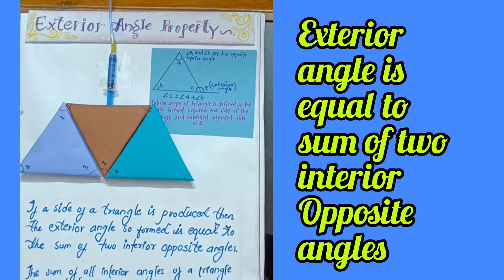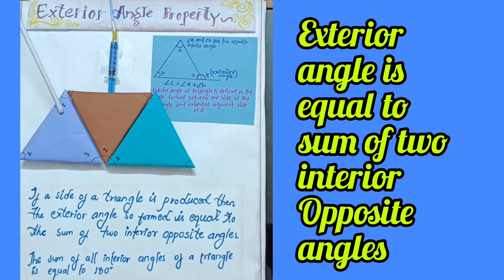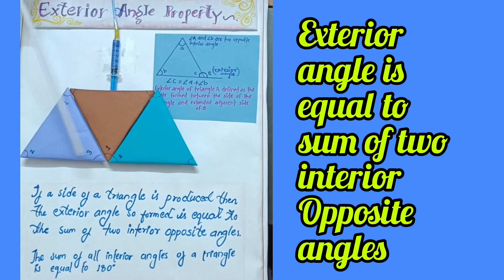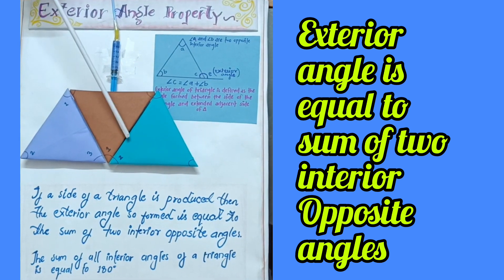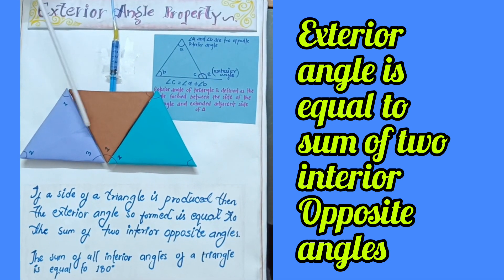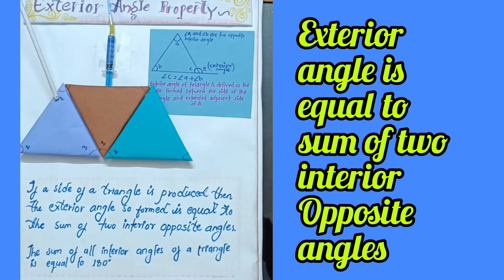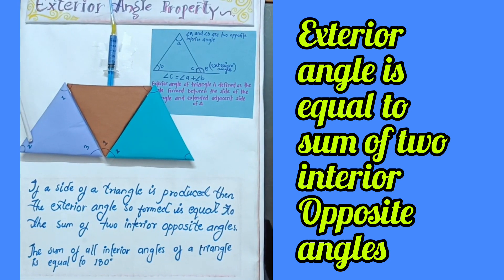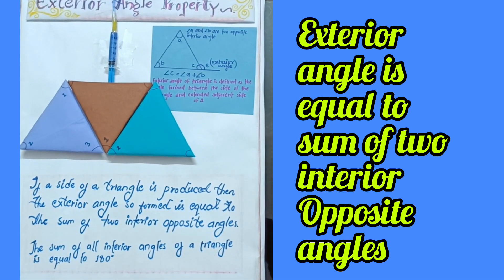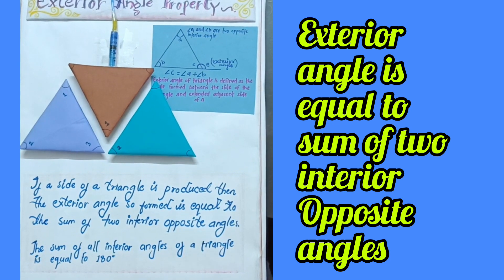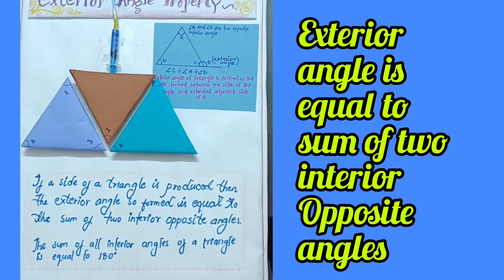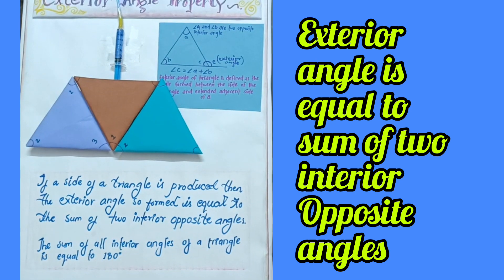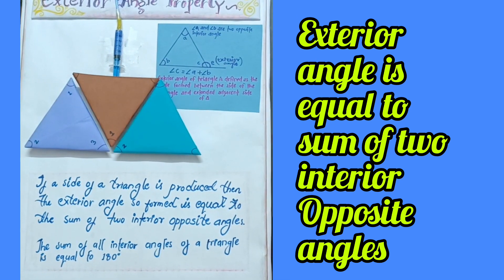Now for the second property: this is angle 1 and this is angle 2. This is the exterior angle. We show that the exterior angle is equal to the sum of angle 1 and angle 2. If we move angle 1, it shows that the exterior angle is equal to the sum of angle 1 and angle 2.